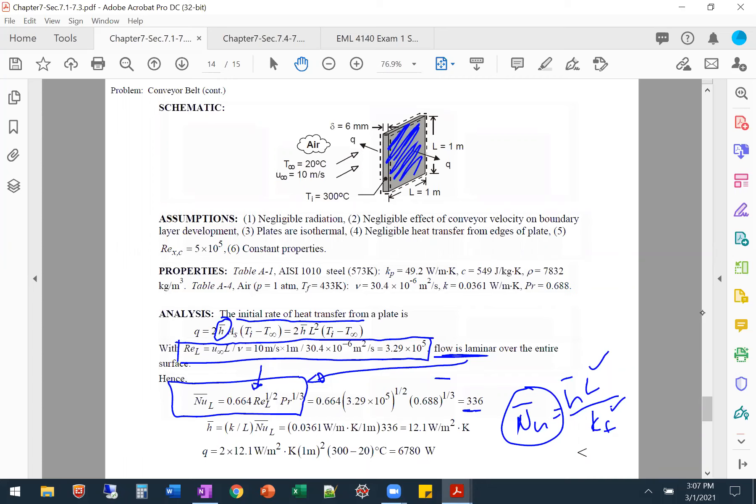We then can rearrange our equation and get the convection coefficient, put it back into Newton's law of cooling right there, and we get our answer here. That's part A.